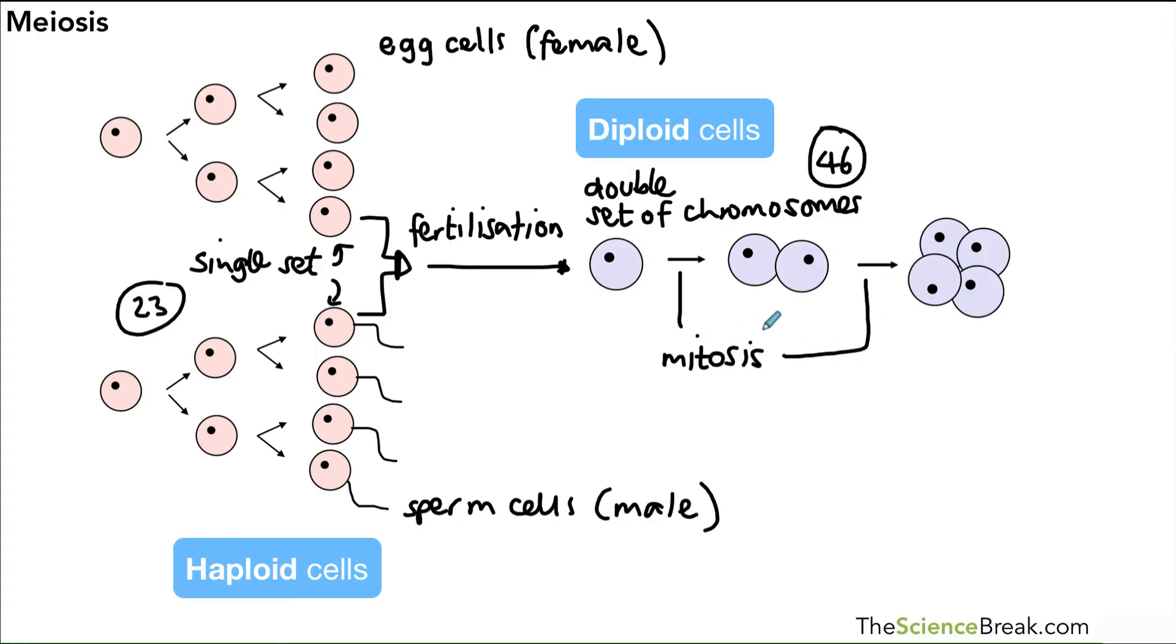From then on, the cell will divide by the process of mitosis, and that will carry on until we get an embryo. We've got cell differentiation and specialization of the embryo cells - they will produce tissues, organs, and organ systems, and that's when we will get our new little human being.